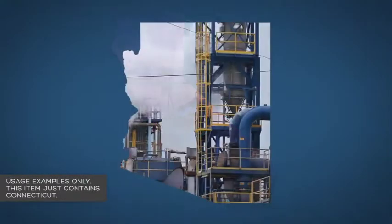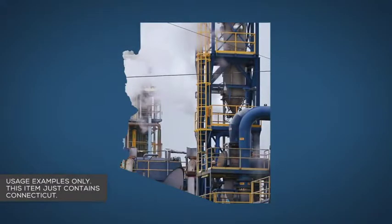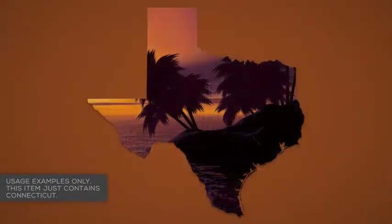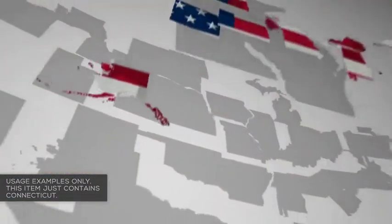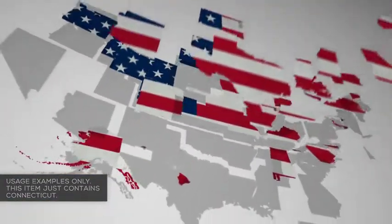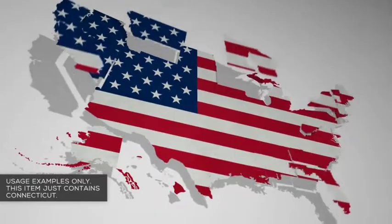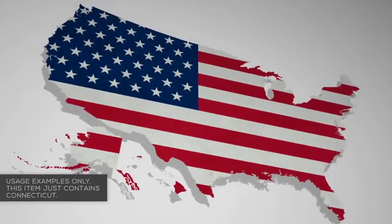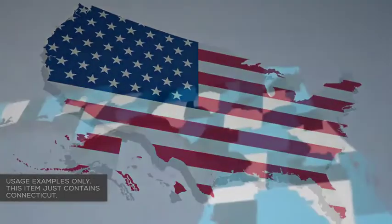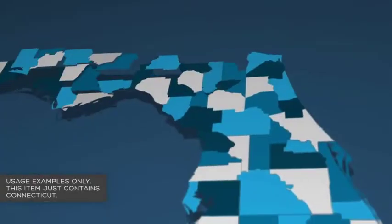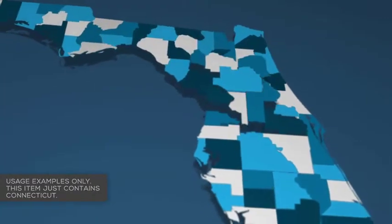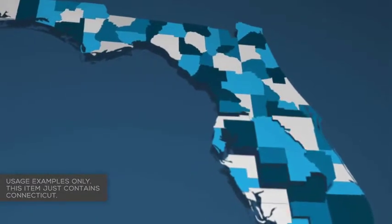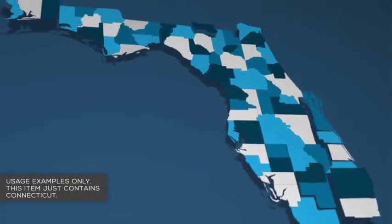Use your own content as a texture for the state — images, footage, whatever you need. Highlight counties with different colors to match your branding and to represent whatever you need the map to represent. Or get creative and add your own animations and images into the texture layers.